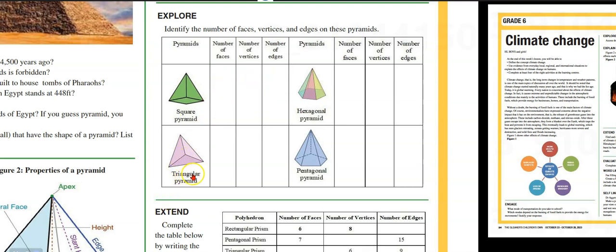Triangular pyramid: number of faces, number of edges, number of vertices, number of edges. We have the hexagonal and the pentagonal pyramid.